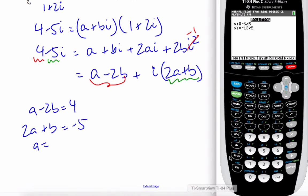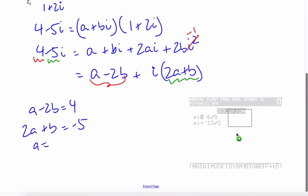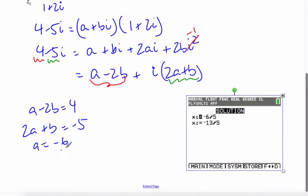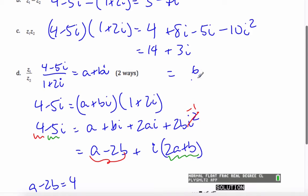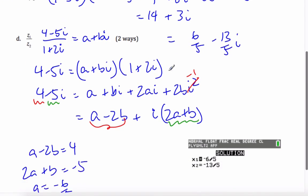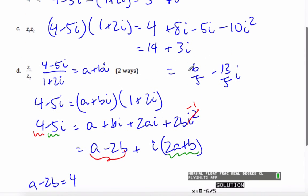And it ends up that a equals negative 6 fifths, b is negative 13 fifths, and so dividing these two, I get the number negative 6 fifths minus 13 fifths i, if I remember the values. That's one way to divide them.